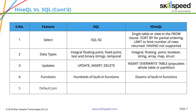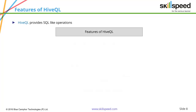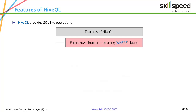When you join dataset A with B, the default join is an inner join in SQL, whereas it is an EQ join in Hive QL. Now let's understand the unique features of Hive. You can filter rows from a table using the WHERE clause — for example, if I have a very large table with one million rows, I can use WHERE month equals January so that all the January data can be easily filtered.